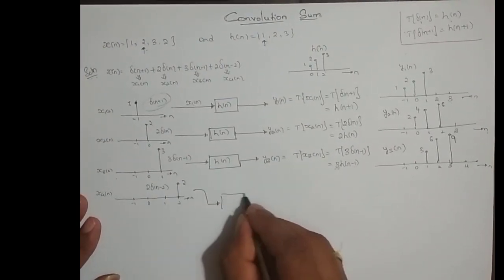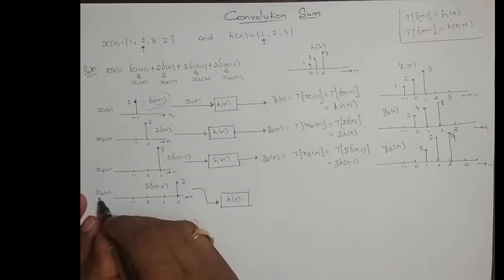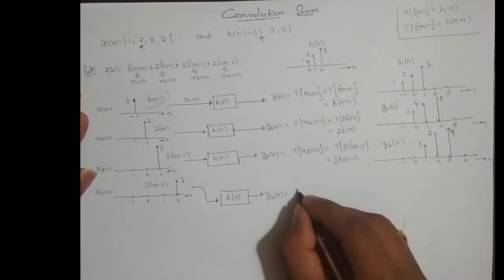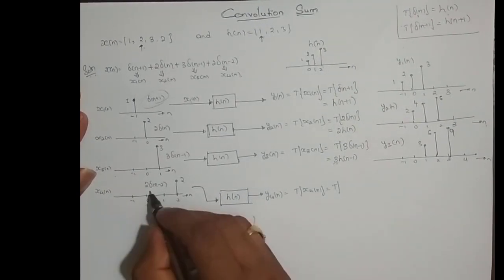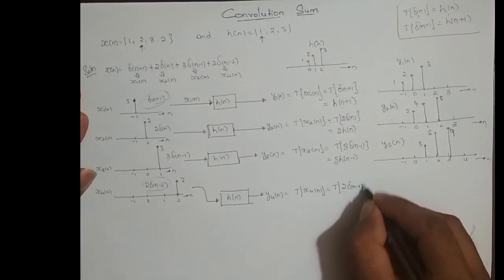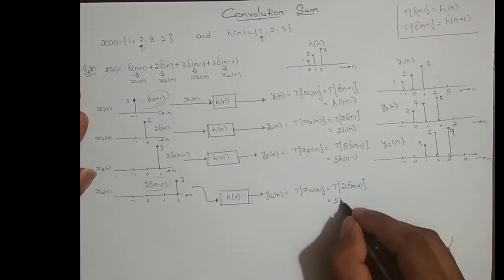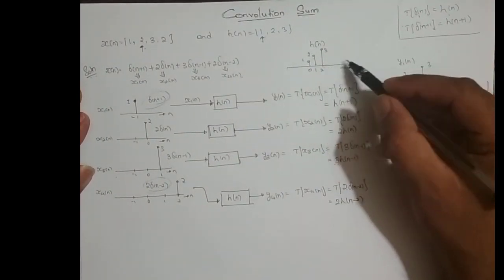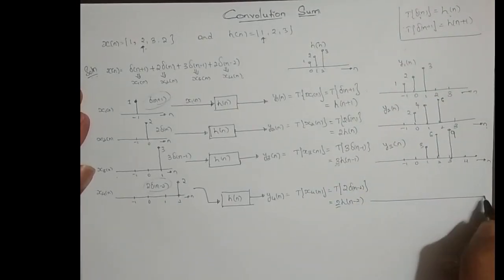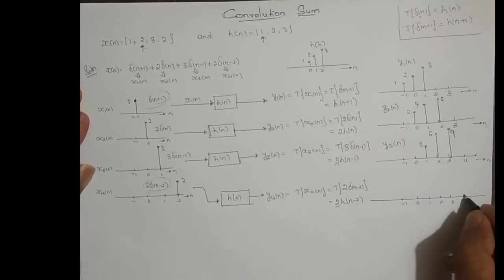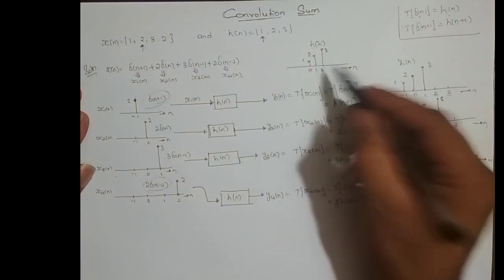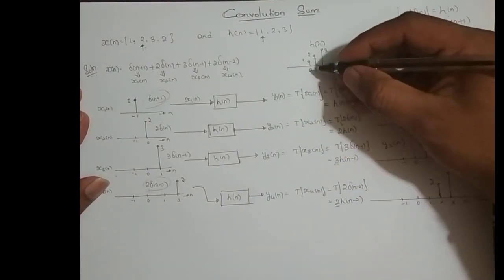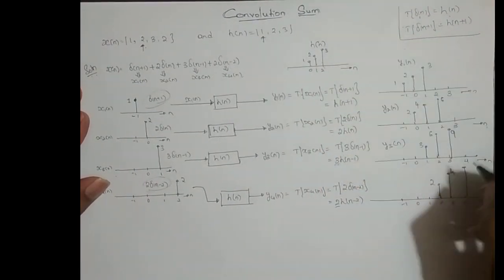Similarly, x4(n) is passed through the same system to get y4(n). Since x4(n) = 2·δ(n-2), we get y4(n) = 2·h(n-2). We shift h(n) right two times and scale by 2, giving values 2, 4, 6 at n = 2, 3, 4.